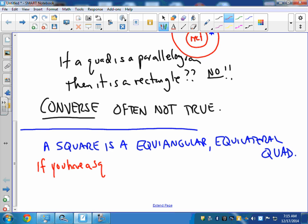Okay, so if we do this as a conditional, this would be the if part: If you have a square, then it has four equal angles, right, equiangular, four equal angles and four equal sides.